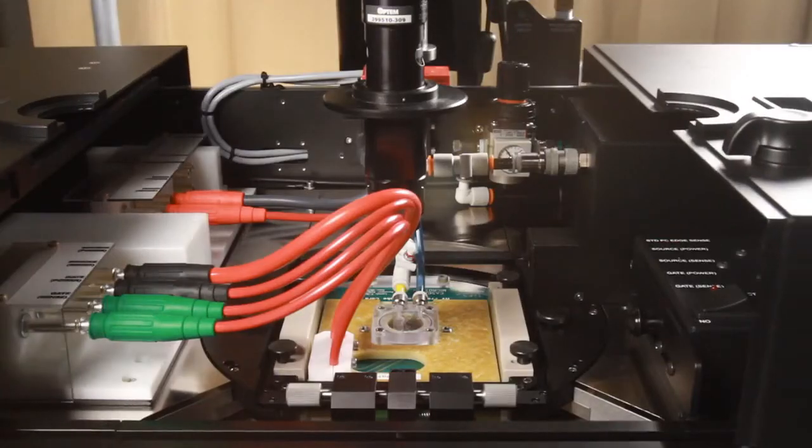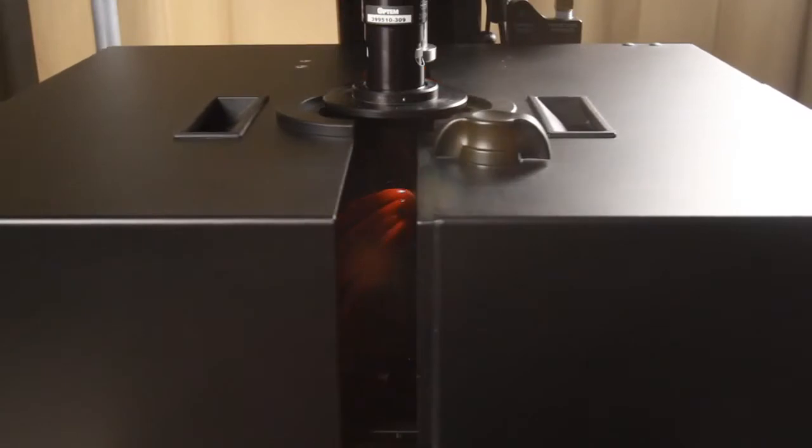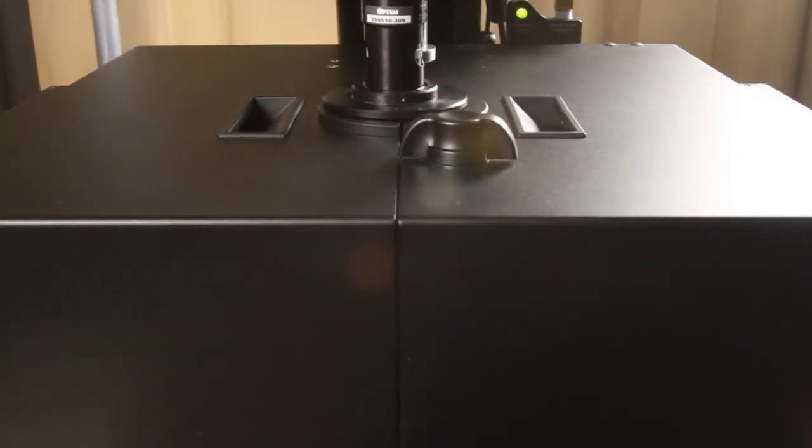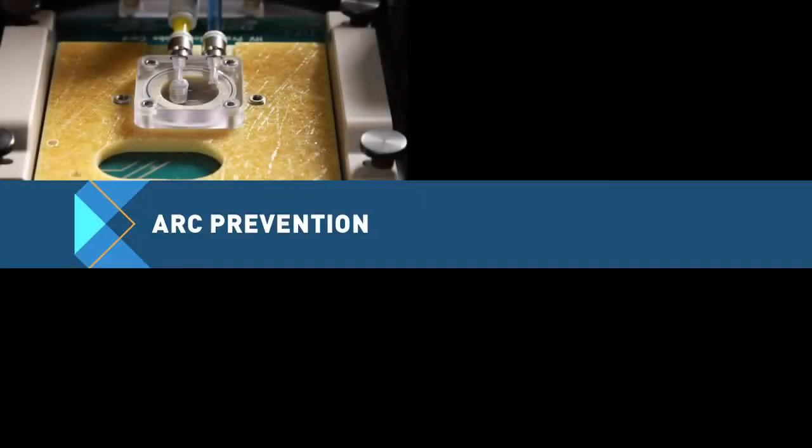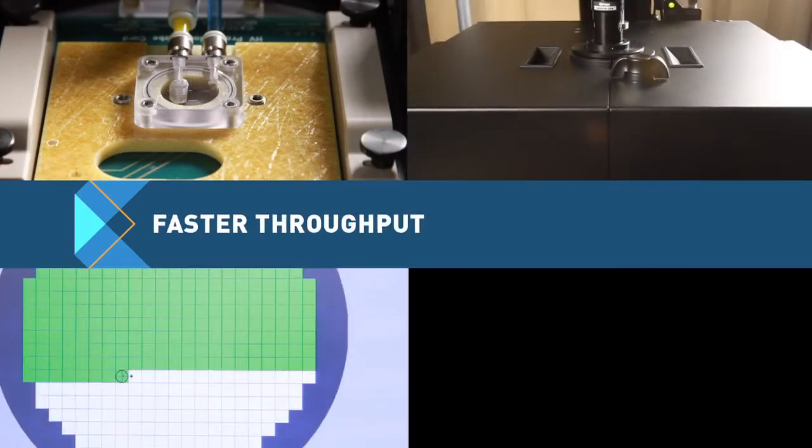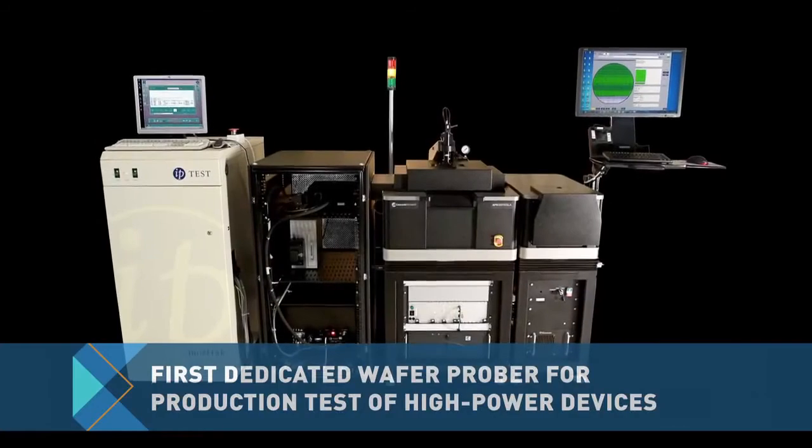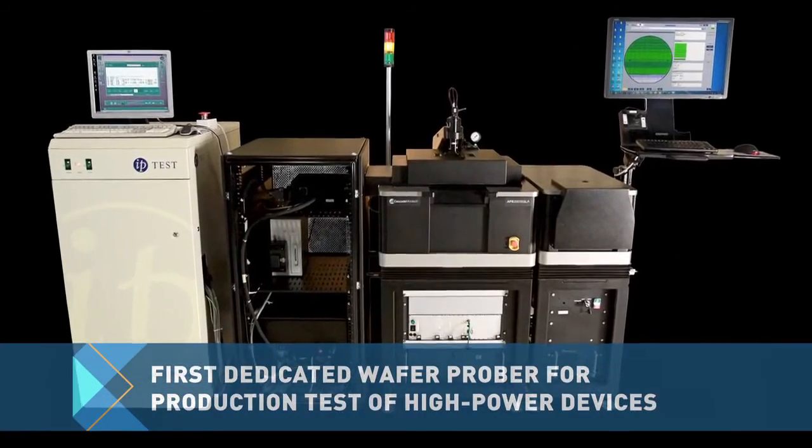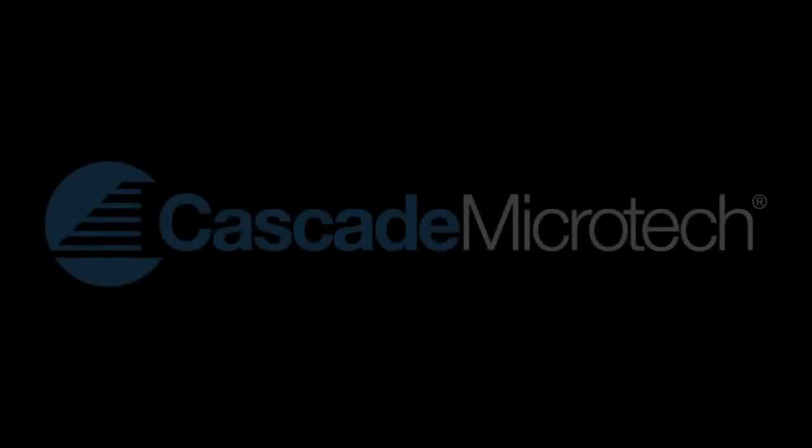The fully automated APS 200 Tesla wafer prober for production test of high power devices provides arc prevention, safer operation, faster throughput and lower cost per device. Another industry first from Cascade Microtech.